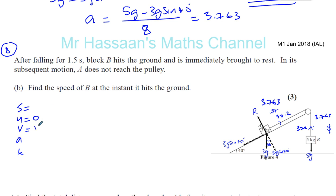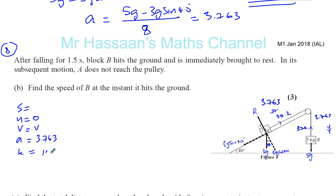So we have V, which is what we need to find. The acceleration is the acceleration we found in the first part of the question, which is 3.763. And T — it tells us 1.5 seconds it's falling for. So we've got to have an equation with V, U, A and T. That's one of the most simple ones.